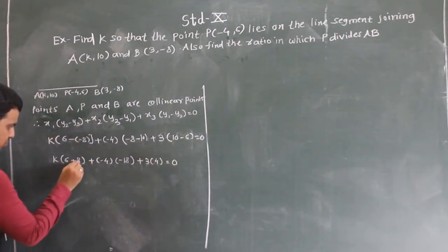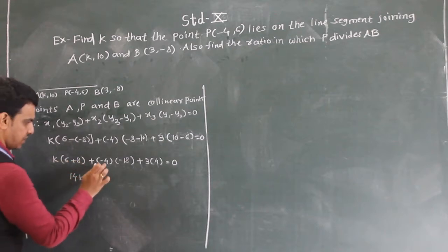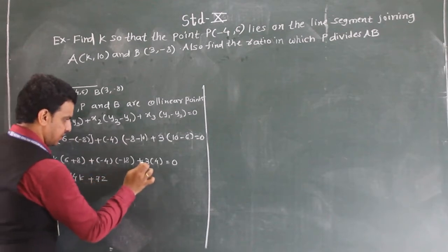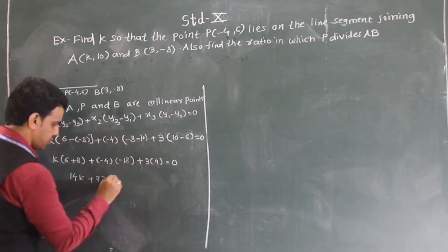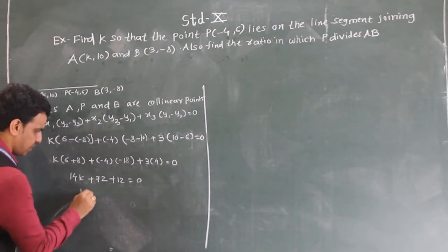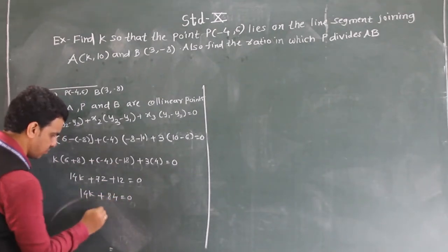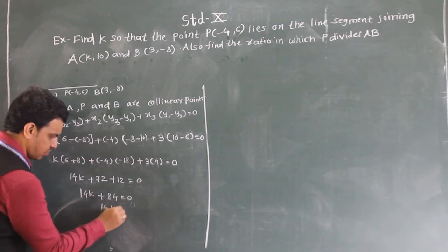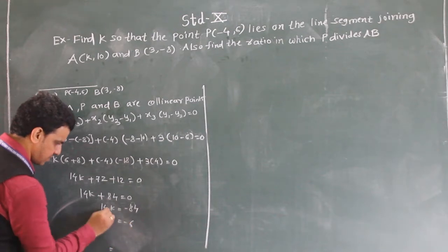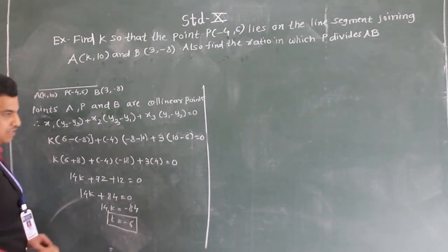So 6 plus 8 is 14, giving 14K. Then -4 times -18 is +72, and 3 times 4 is 12. So 14K + 84 = 0, which gives K = -6. So the value of K is -6.